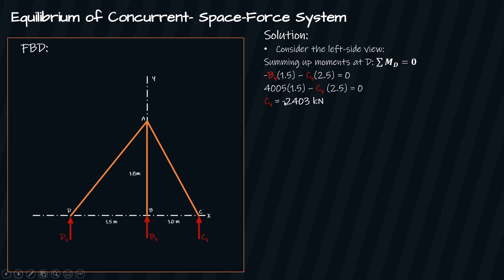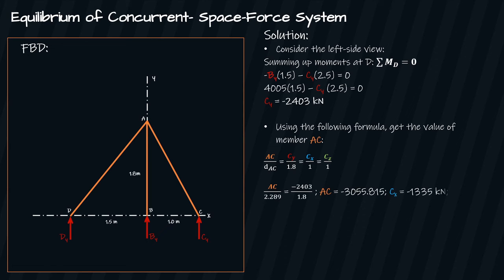The negative sign doesn't mean you are wrong, but your assumption of the direction of your component. Using the following formula, get the value of member AC. AC equals to negative 3055.815 kilonewtons. Cx is negative 1335 kilonewtons, and Cz is negative 1335 kilonewtons.